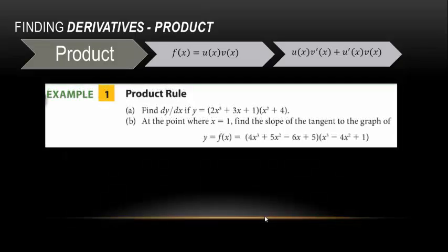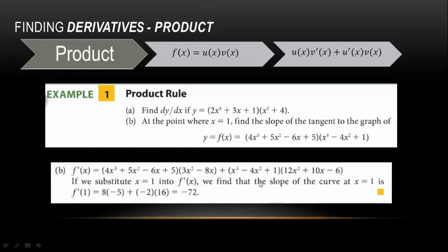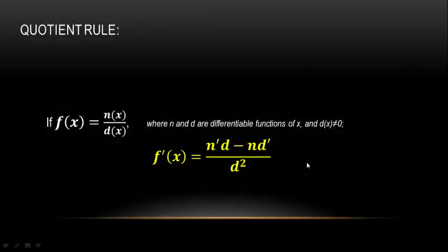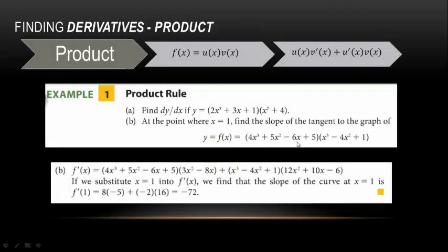The next problem has a longer polynomial. The first function times the derivative of the second: the derivative of x³ is 3x², the derivative of −4x² is −8x, and the derivative of 1 is 0. So we get 3x² − 8x. Times the first function: the derivative of 4x³ is 12x², the derivative of 5x² is 10x, and the derivative of −6x is −6. The derivative of the constant 5 is 0.